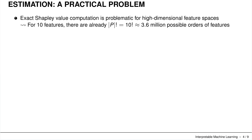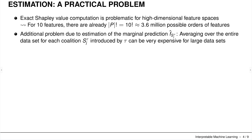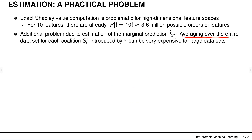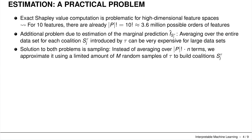The exact Shapley value computation is quite problematic for high-dimensional feature spaces. Even with only 10 features we end up with 3.6 million possible orderings, which quickly becomes infeasible to calculate. An additional problem is averaging over the entire dataset — the second sum over all observations — which can also be very expensive for large datasets.